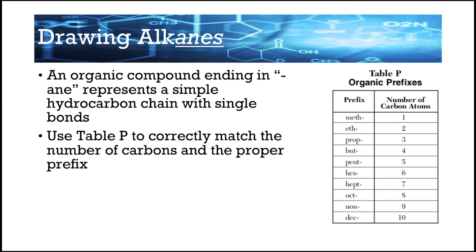Now let's explore how to draw alkanes. Alkanes involve all single bonds and are organic compounds ending in '-ane.' Table P tells you the prefixes — prefix means the beginning of the word. Suffixes come at the end. Any alkane ends in '-ane,' meaning single bond. One carbon is 'meth-', two is 'eth-', three is 'prop-', four is 'but-', and so on.